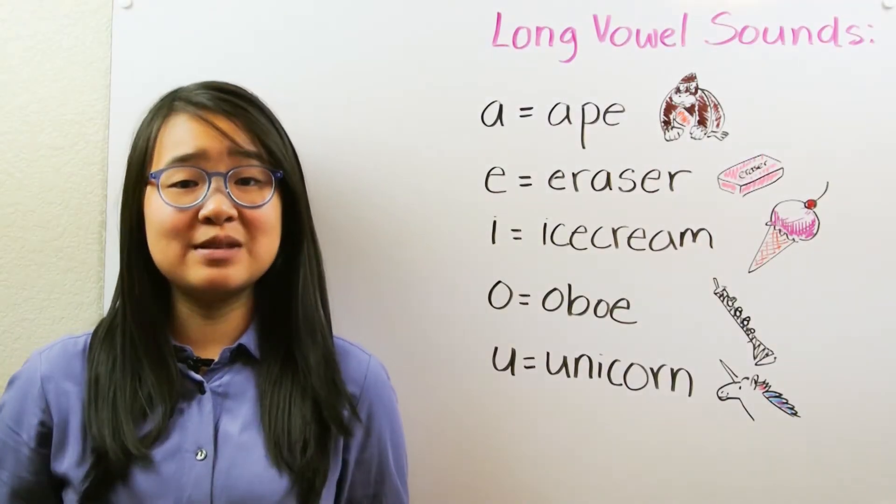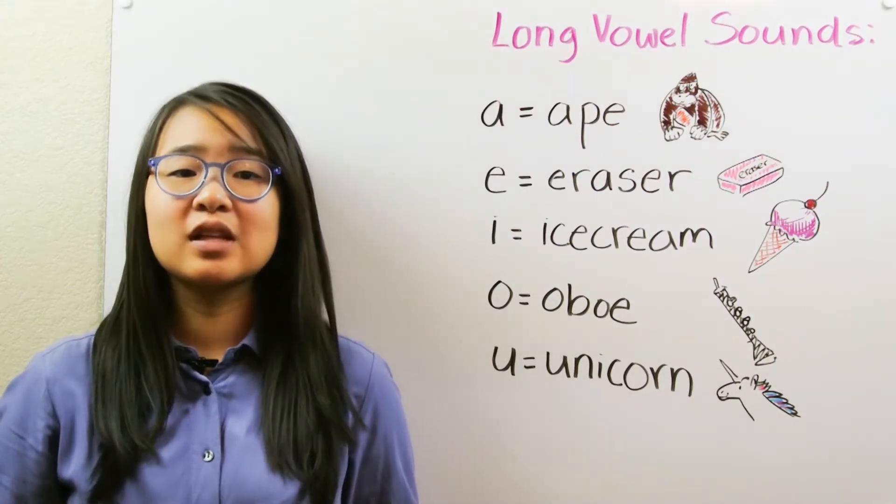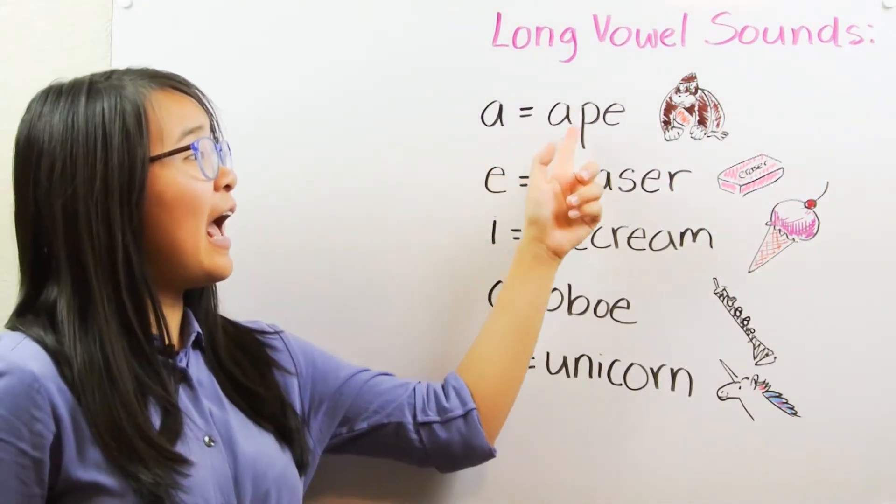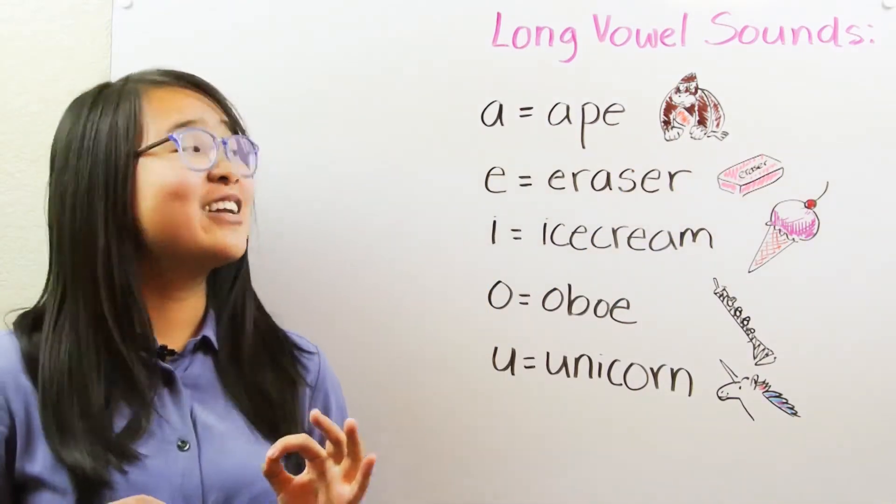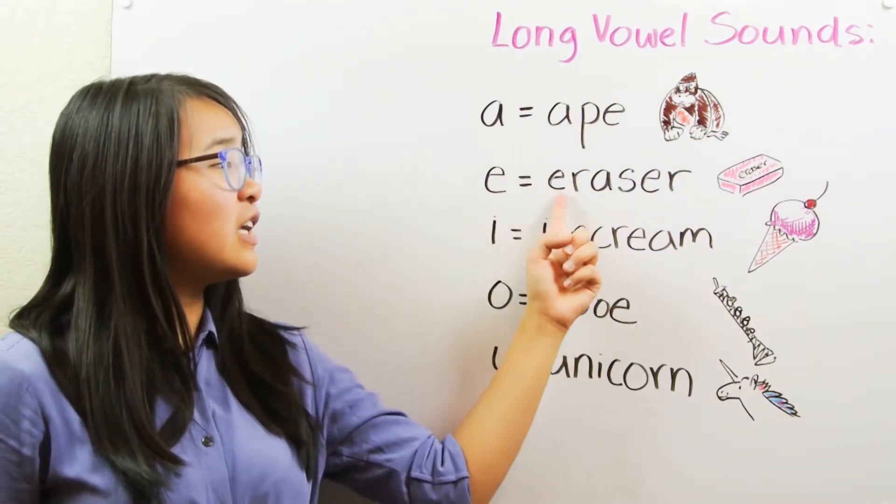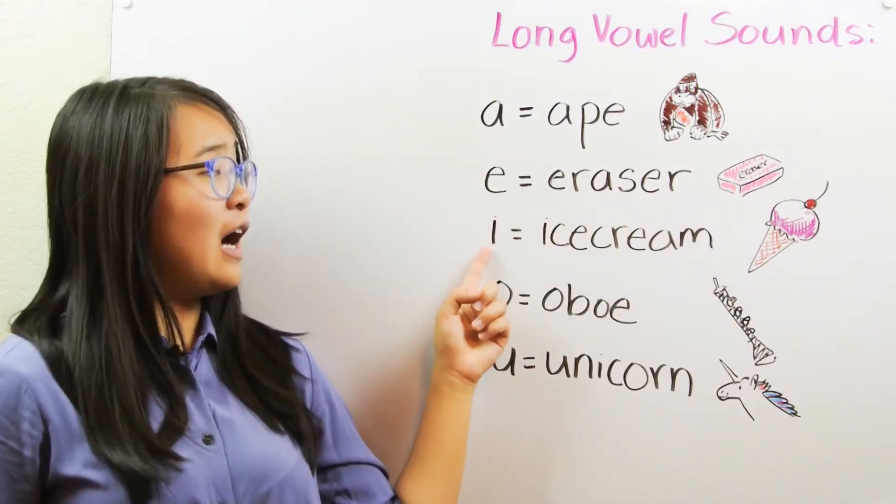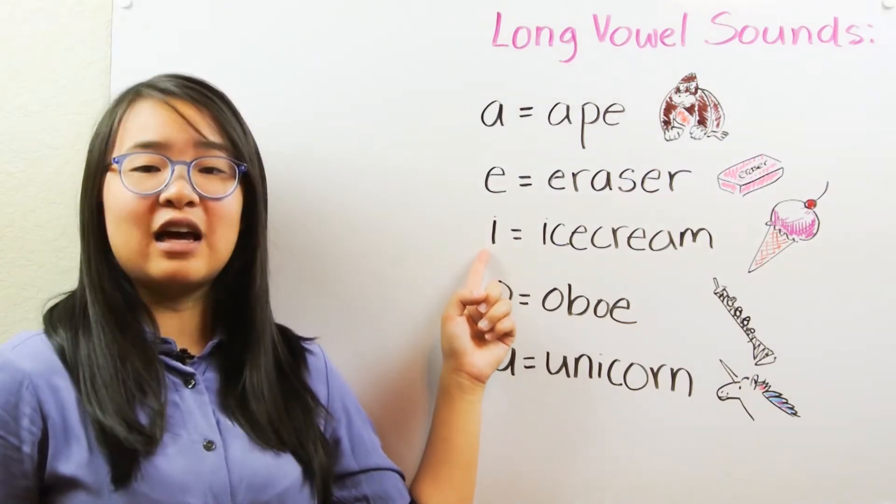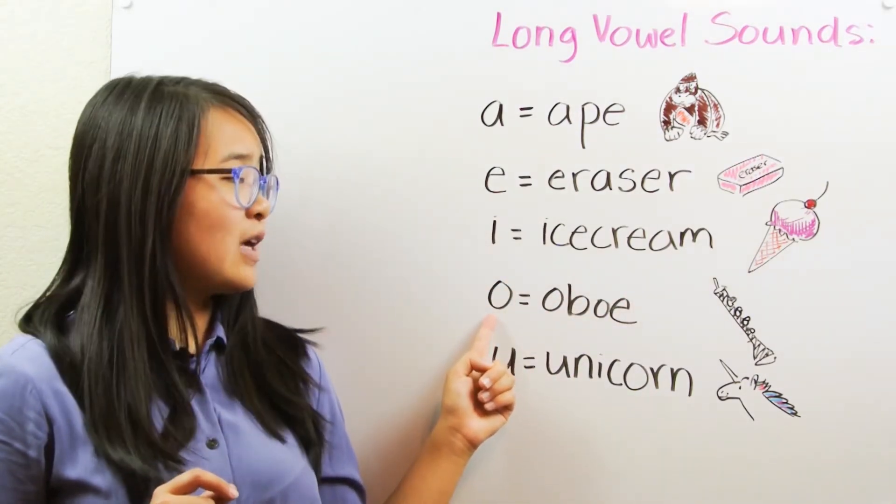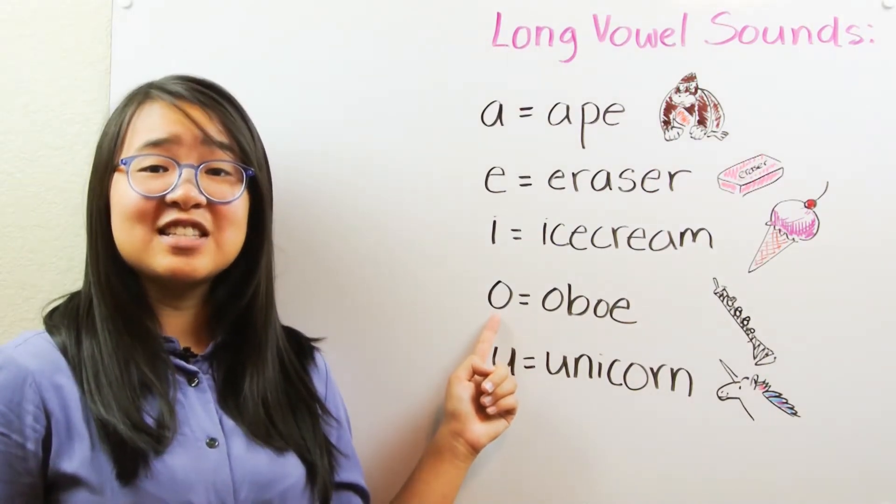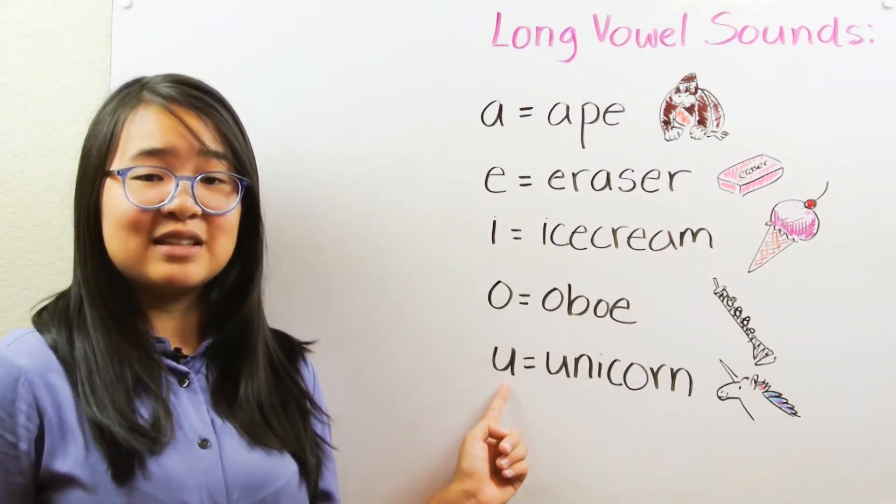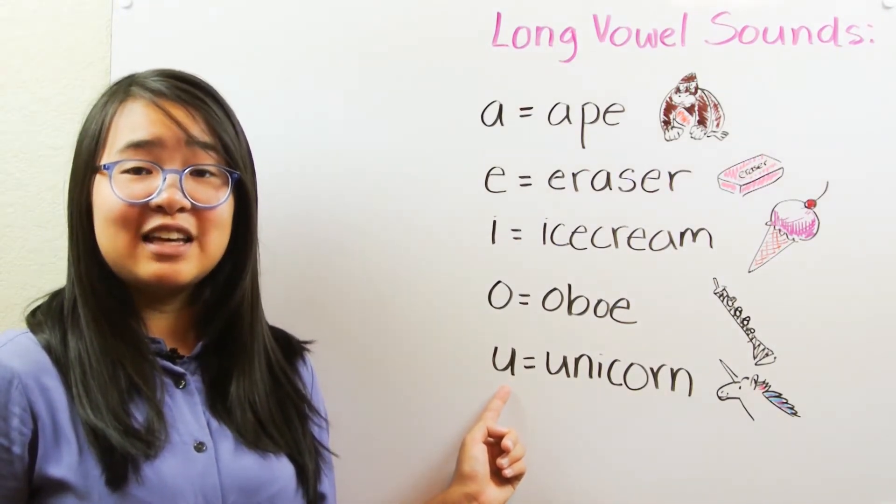Long vowel sounds are sounds that are just like the name of each letter. The long letter A makes the A sound, just like in the word ape. The long letter E makes the E sound, just like in the word eraser. The long letter I makes an I sound, just like in the word ice cream. The long letter O makes an O sound, just like in the word oboe. The long letter U makes a U sound, just like in the word unicorn.